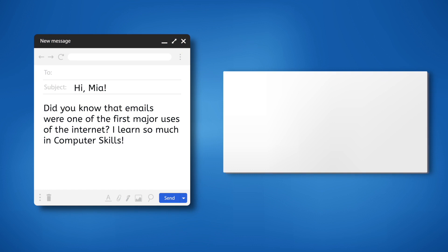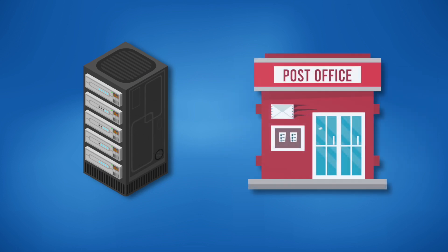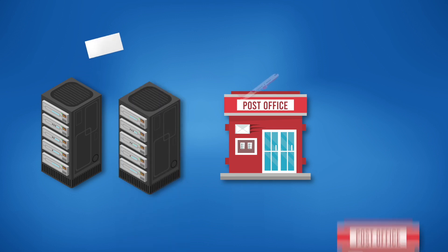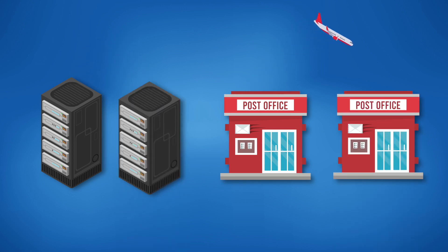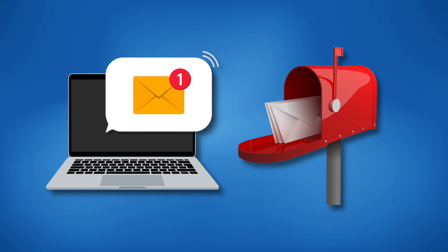The way email works is pretty similar to physical mail. Before you can send an email, you have to write in the email address of the recipient, just like writing the address on a physical letter. Once the user hits send, it goes to an outgoing server, similar to your local post office. The message is then sent to the recipient's email server, like how mail gets transported to the post office closest to its recipient.